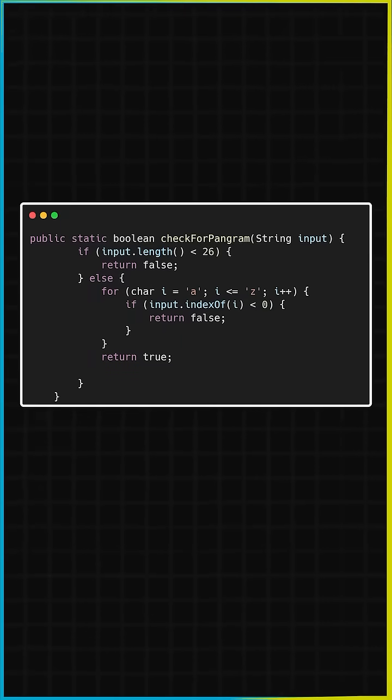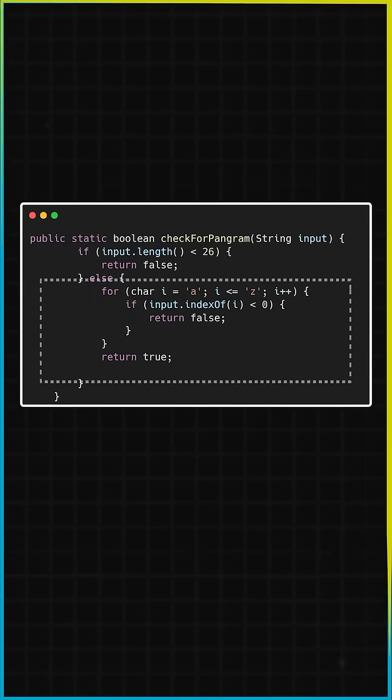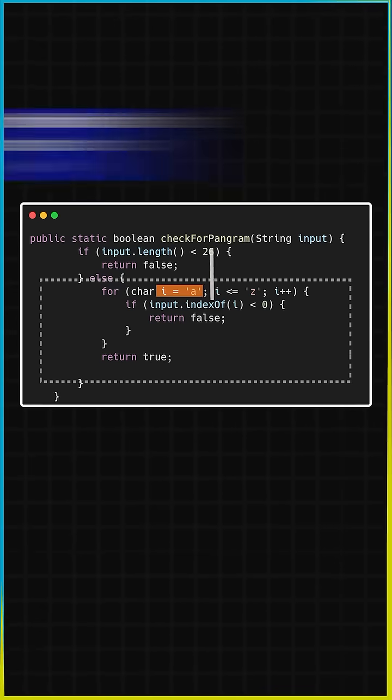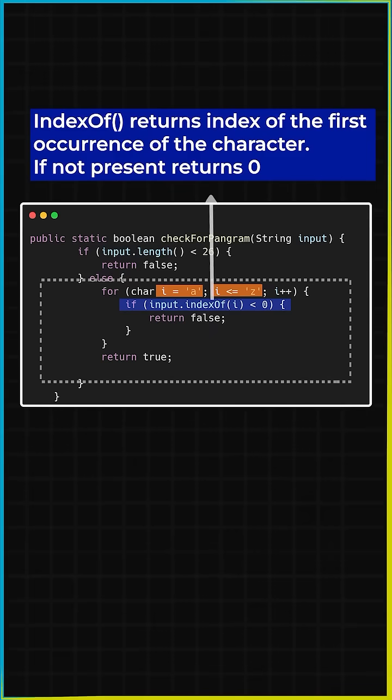We would then iterate through each letter of the alphabet using a simple for loop. In order to check if a character is present in the string we would use the indexOf method from the string class.